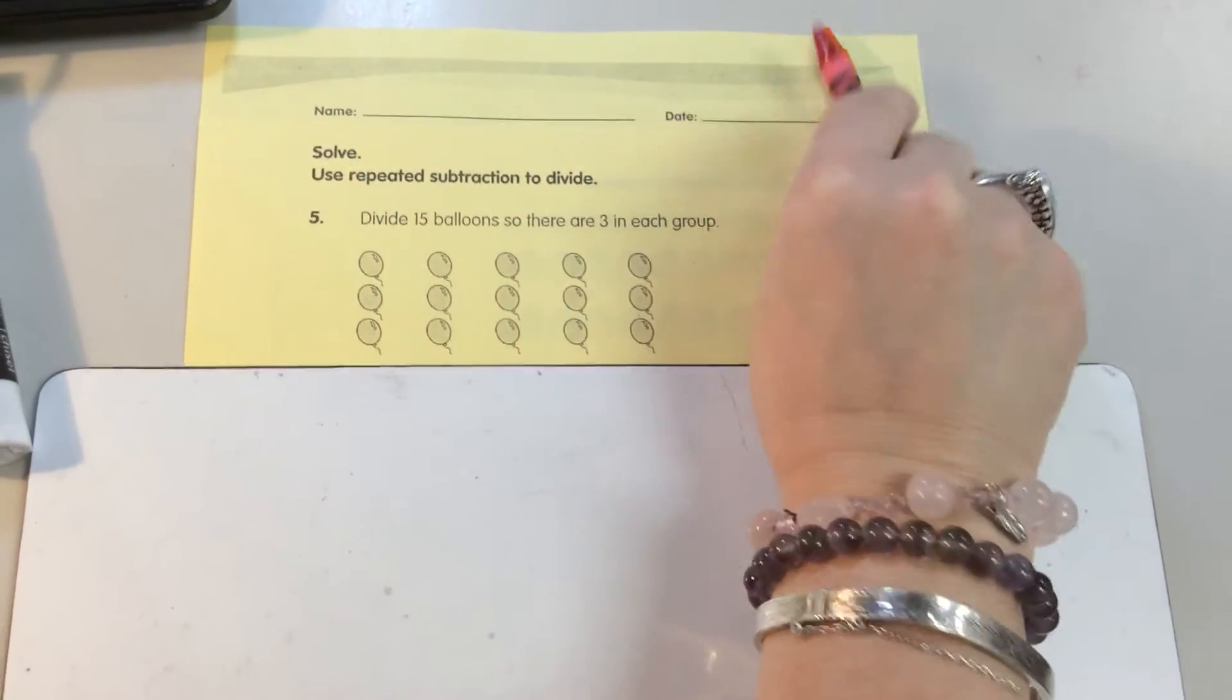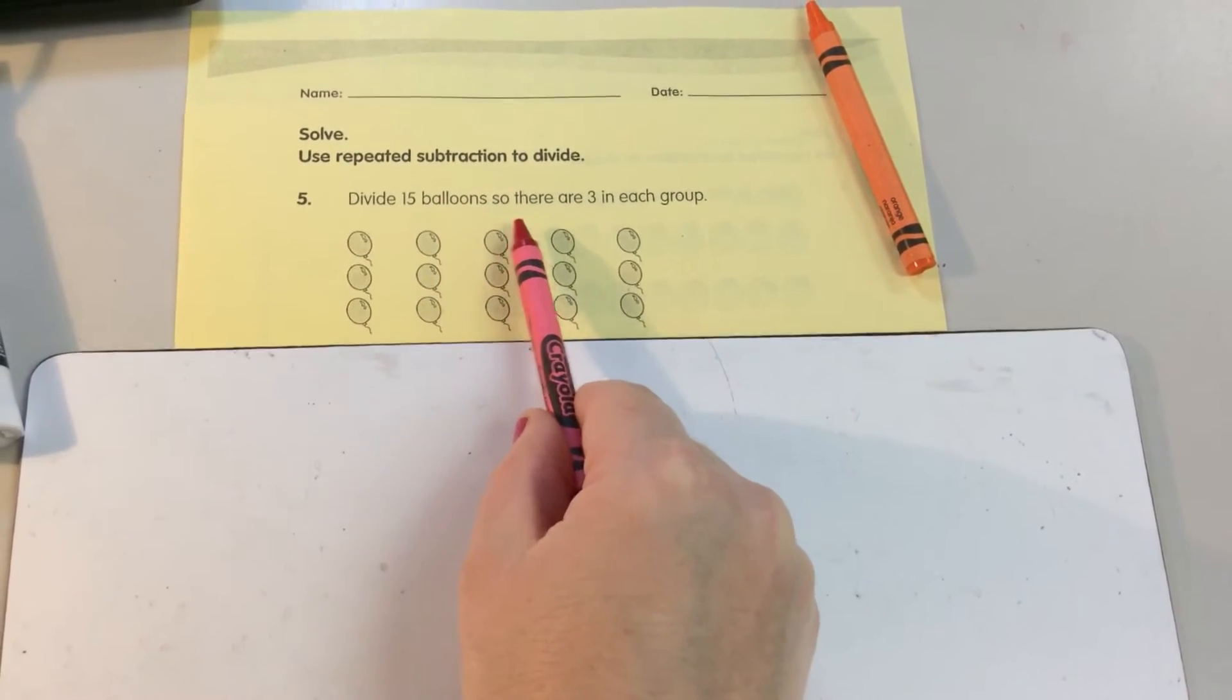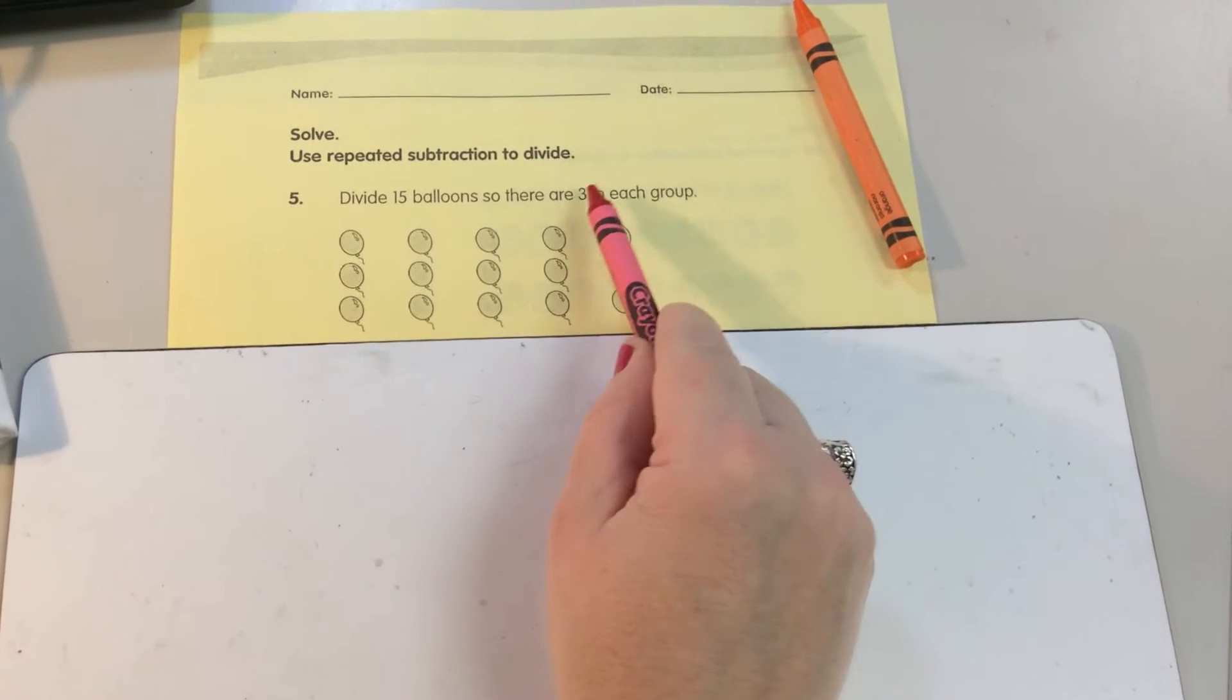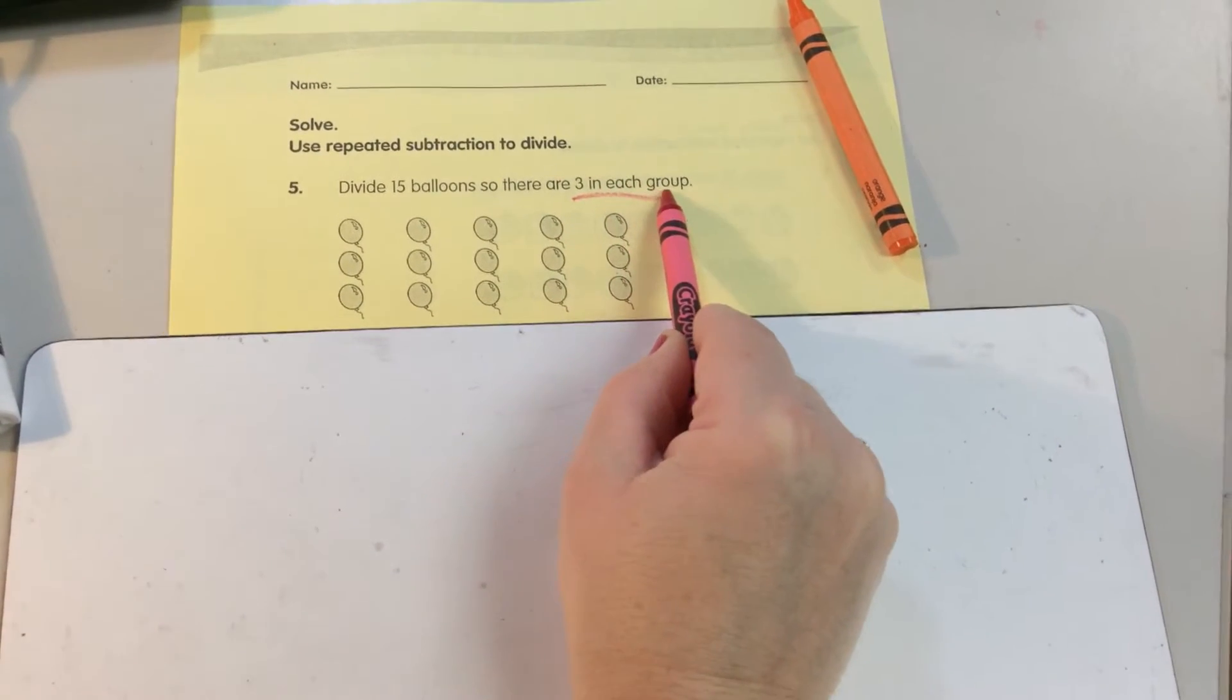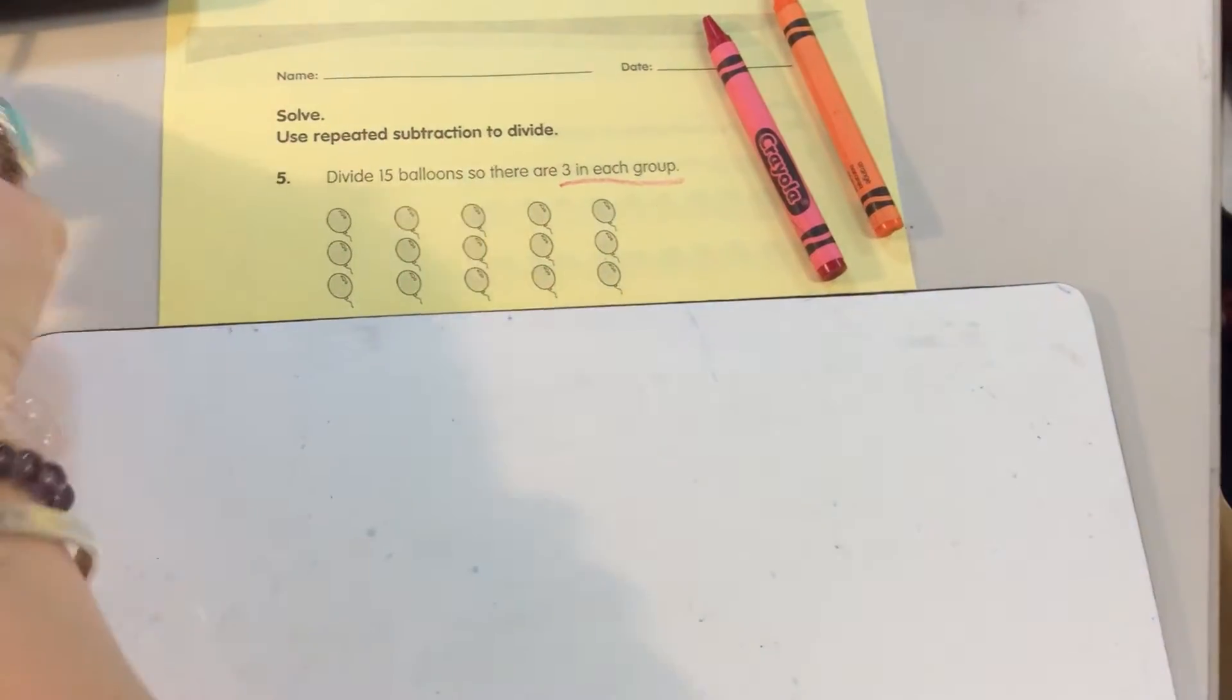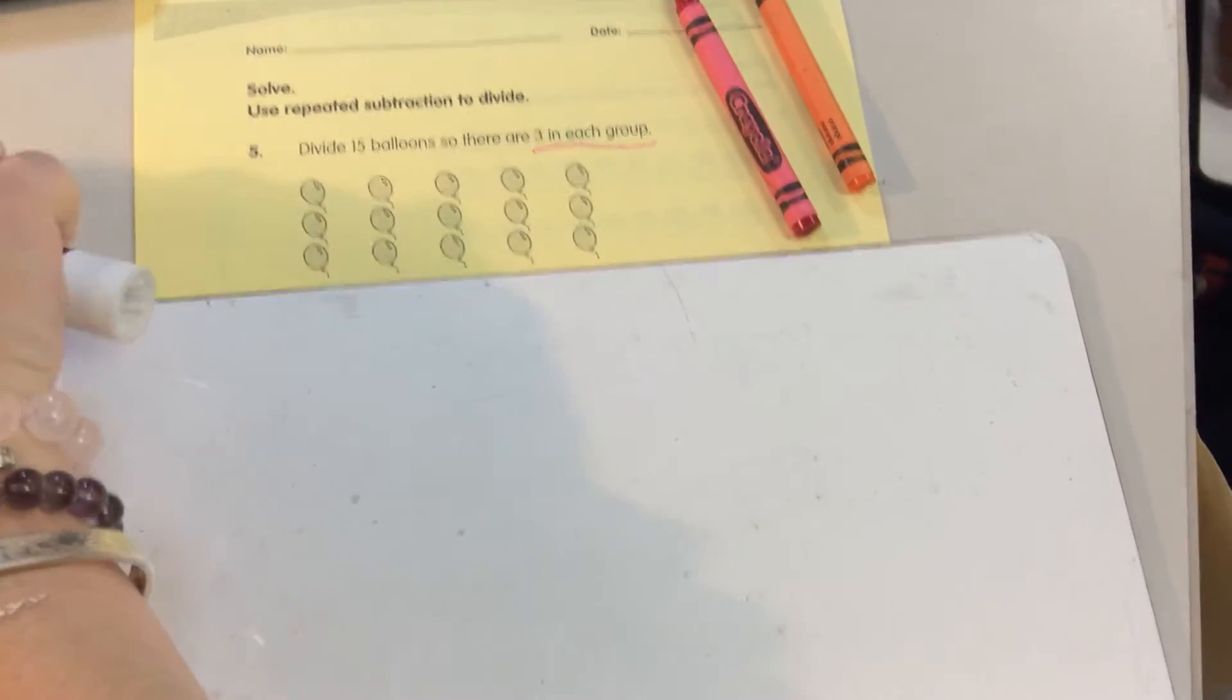Now, our problem says divide 15 balloons so there are 3 in each group. So we need 3 in each group. Now, so you start writing what I'm writing. So we have 15 balloons. Draw your 15 balloons.